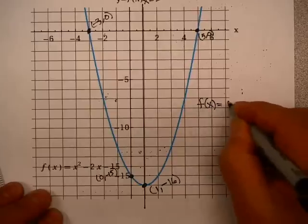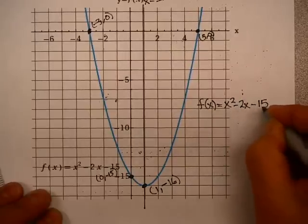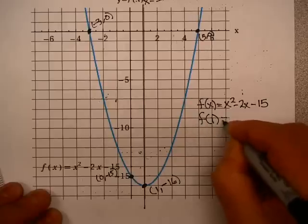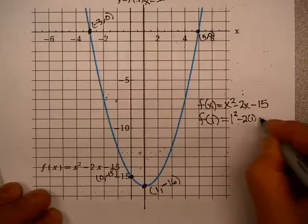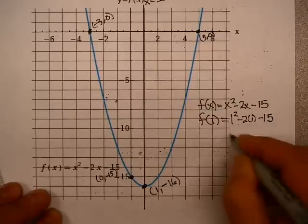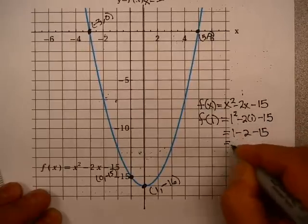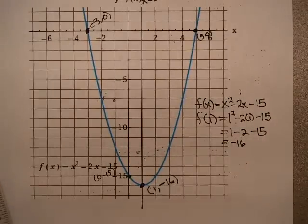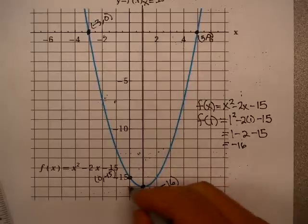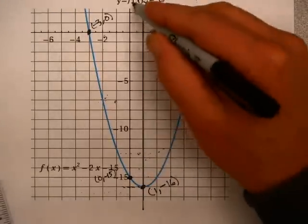Your equation is x squared minus 2x minus 15. I'm going to say f(1), just to show you how to do that, is 1 squared minus 2 times 1 minus 15. That gives you 1 minus 2 minus 15. If you do the arithmetic, that gives you minus 16, which is the y-coordinate of that point. That means the range is from minus 16 up.